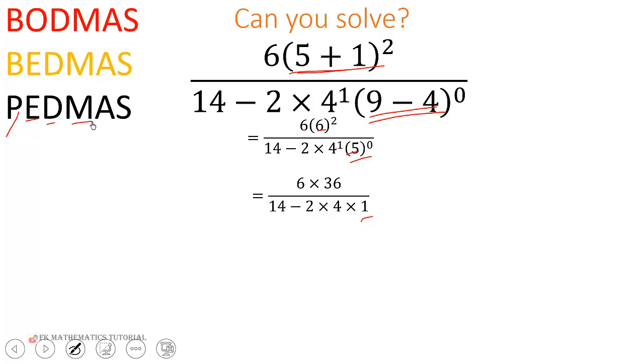We need to simplify the numerator and the denominator. Let's keep this as it is in the numerator and simplify the denominator by using the order of operations there. First we need to multiply before we subtract.